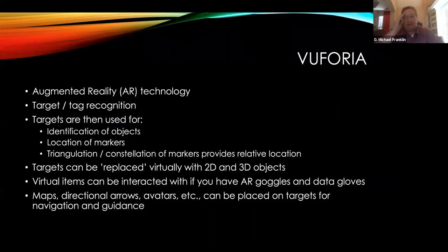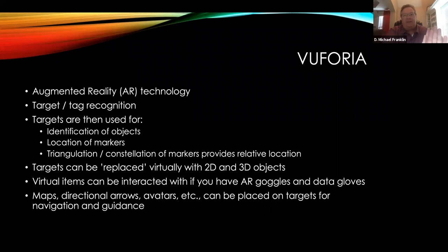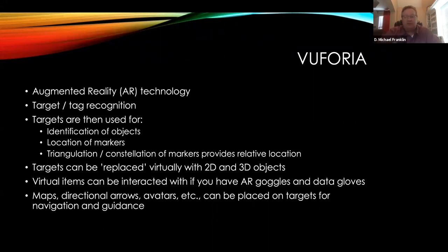That brings us to the second topic: Vuforia. Vuforia is a trademark name for an augmented reality technology that has been around for quite a while. What Vuforia does is recognize targets and tags — things like QR codes and other patterns. When it recognizes that pattern, it has an augmented reality ability to overlay a scanned image, picture, orientation bar, or marker of some kind. It can return to you the centroid of where that thing is located — the center of mass of that object — giving you both the location and orientation of that object.